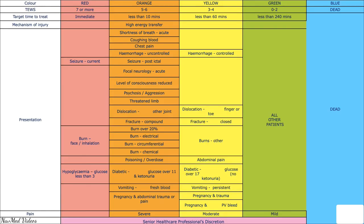Using the color coding: a TWOS score of 7 or more is red, 5 to 6 is orange, 3 to 4 is yellow, 0 to 2 is green, and blue indicates the patient is deceased. Consider what other factors you would use in your scoring system.